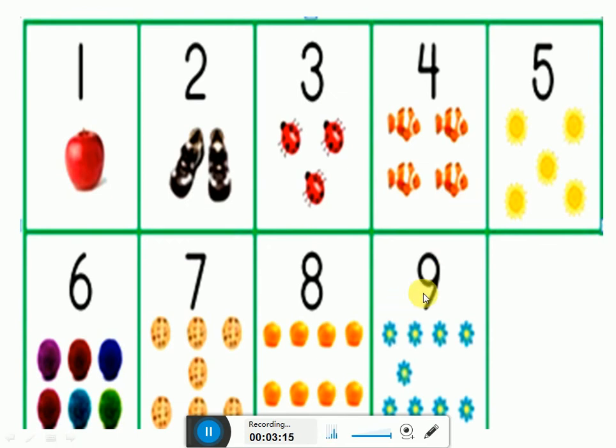Here are 8 lemons. And here is number 9. And here are 9 blue flowers. Let's count 9 blue flowers.